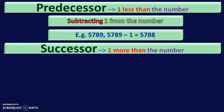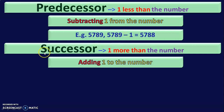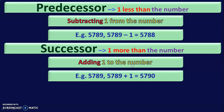Next, what is a successor? Successor means 1 more than the number. The keywords are: for predecessor, the keyword is 'less than'; to arrive at a successor, the keyword is 'more than'. More than always means adding and less than always means subtracting. To find the predecessor subtract 1, and to find the successor add 1 to the given number. Taking the same example of 5789, to find the successor add 1: the answer is 5790. So 5790 is the successor of 5789.